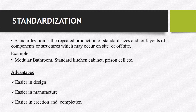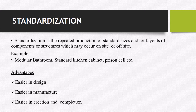For example, we can take modular kitchens which are commonly used in city areas. The crew members will come and get the data — that is, dimension sizes — from your home. They will go back and work on it in their office and then come and install the components. They are just taking the dimensions from your home, taking the required components, and installing them. This is a standardized procedure for modular kitchens, which is the best example for standardization.